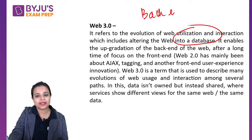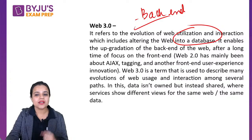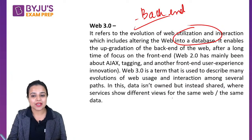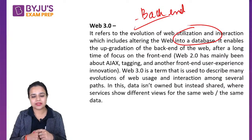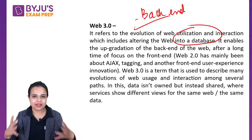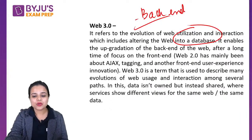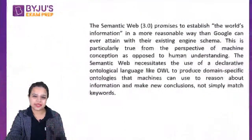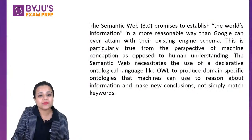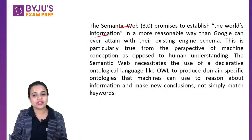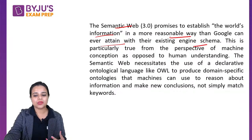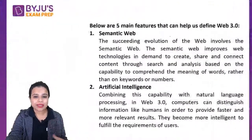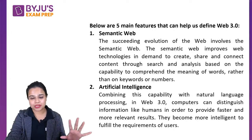In Web 3.0, the back-end is where more work is happening — earlier the focus was mostly on the front-end. The data is not owned by any one person; it is shareable, like cloud storage. We can share that data in different ways. This is called the Semantic Web — organizing the world's information in a more reasonable way than what Google can achieve with its existing search engine schema.